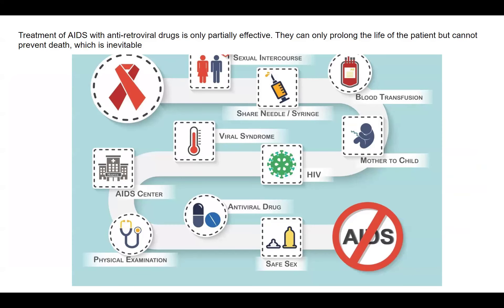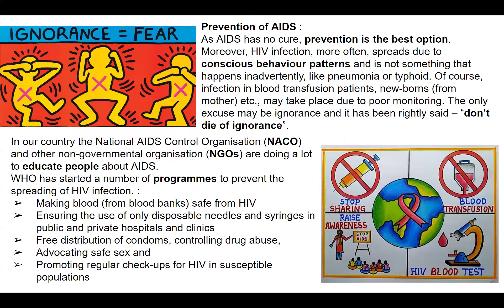There are antiretroviral drugs which are partially effective. Till date there is no cure for AIDS, but if detected at very initial stages, it can be managed. Once AIDS has developed, it is difficult to reverse. These drugs can only prolong the life of a patient but cannot prevent death. Without HIV medicines, HIV advances to AIDS in about 10 years.